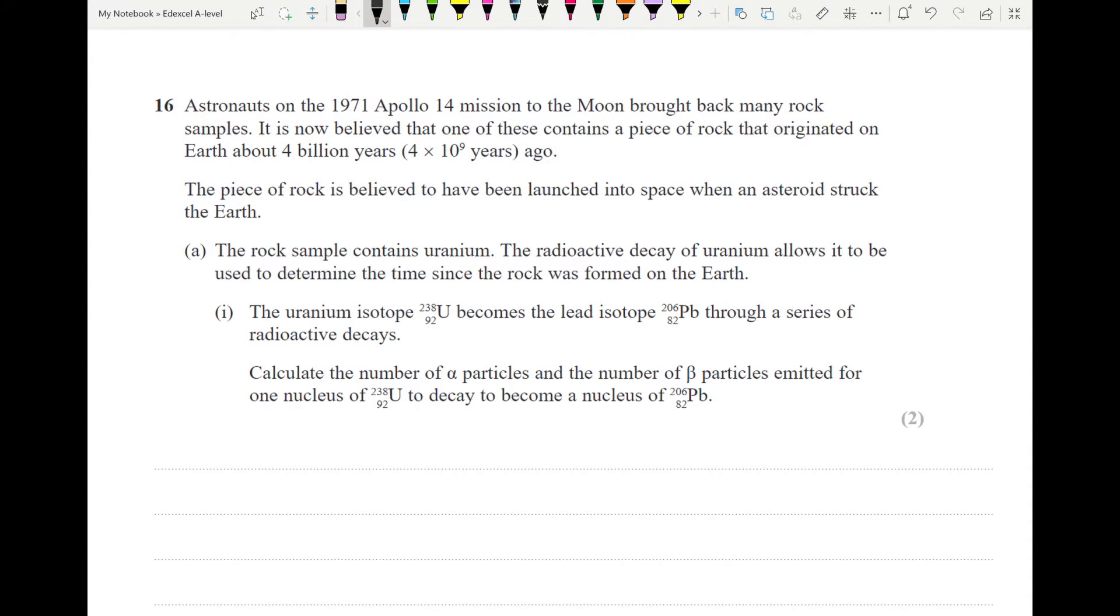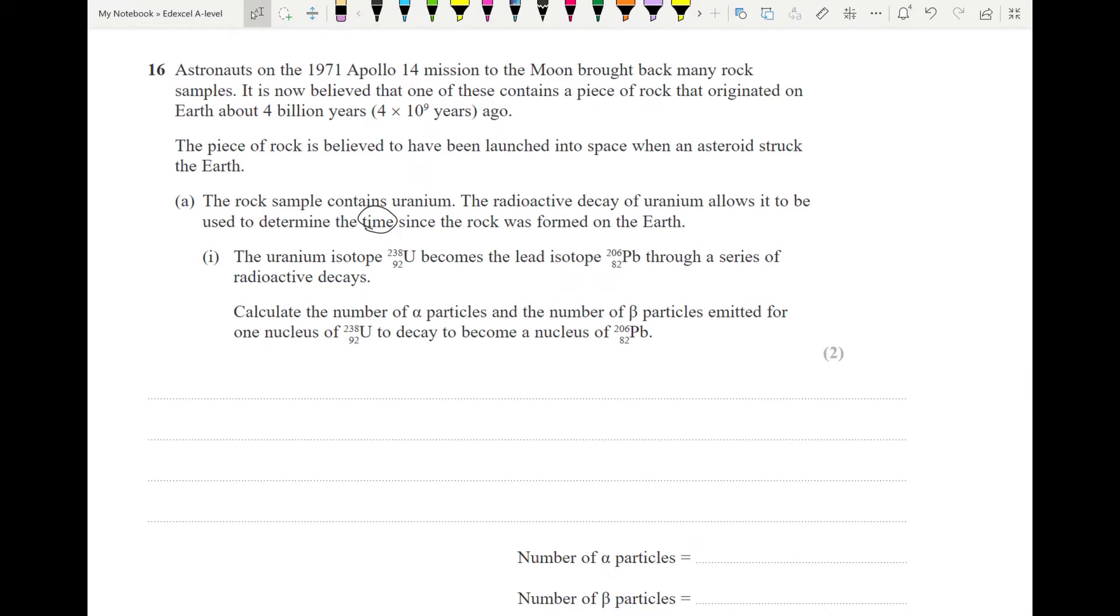The second question I'm going to do today. Astronauts on the Apollo mission brought back many rock samples from the Moon. It's believed that one of these contains a piece of rock that originated on the Earth about 4 billion years ago. It's believed to have been launched into space when we were struck by an asteroid. It contains uranium. The radioactive decay of uranium allows it to be used to determine the time since the rock was formed. The uranium isotope becomes lead isotope through a series of decays. Calculate the number of alpha and the number of beta particles emitted for one nucleus of uranium-238 to decay to become a nucleus of lead-206.